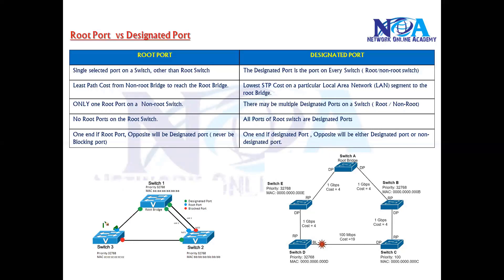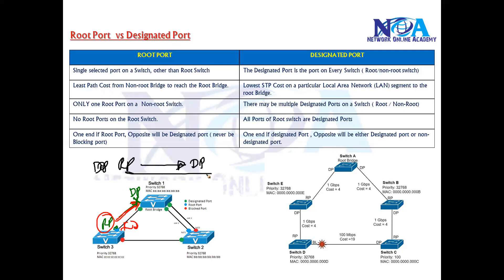If one side is a root port, the opposite side will always be a designated port, because the root port is the shortest path to the root bridge and will be in the forwarding role — the opposite side will never be blocking. However, if one side is a designated port, the other side can be a designated port or a blocking port — it depends on the STP calculations.